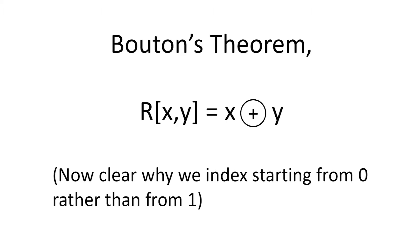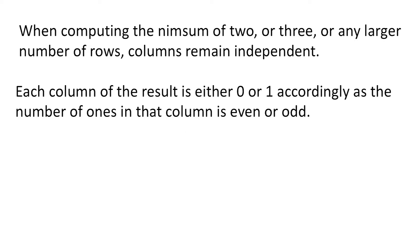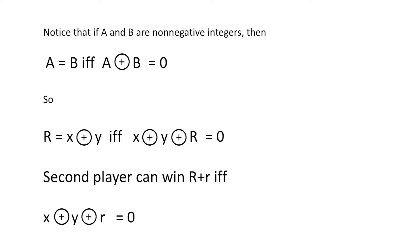As with ordinary addition, three or more numbers can be nim summed all at once. Columns remain independent. If a column contains an even number of ones, its nim sum is zero. If it contains an odd number of ones, its nim sum is one. We also notice that the nim sum of only two numbers is zero if and only if those two numbers are equal.